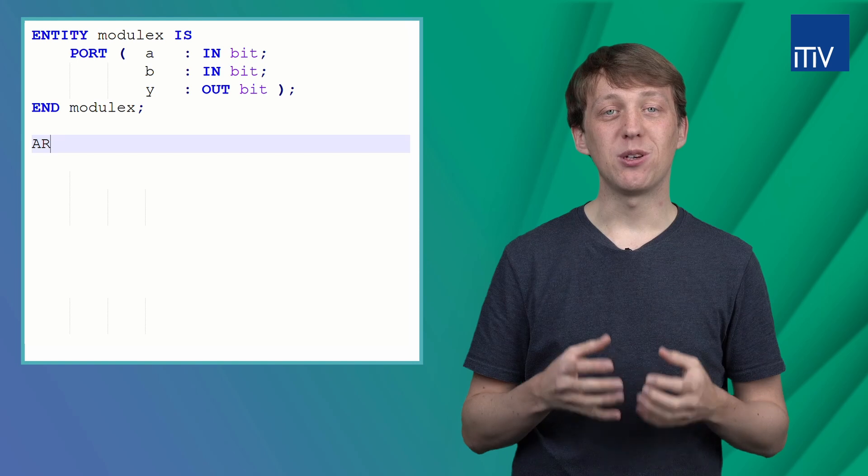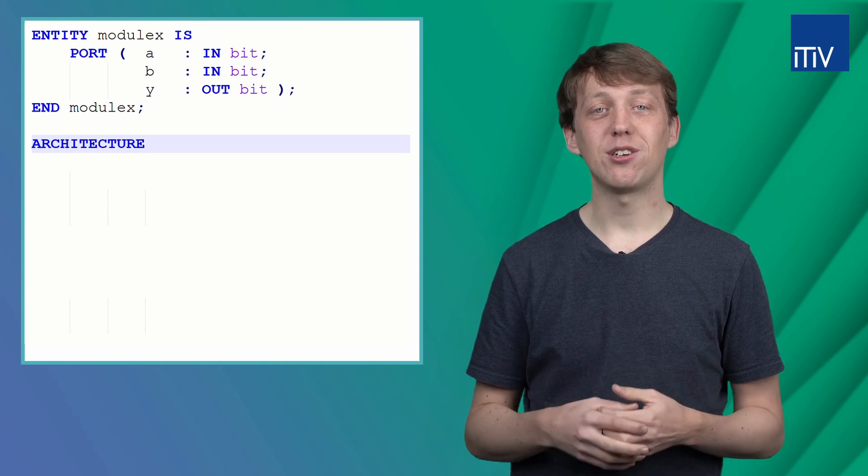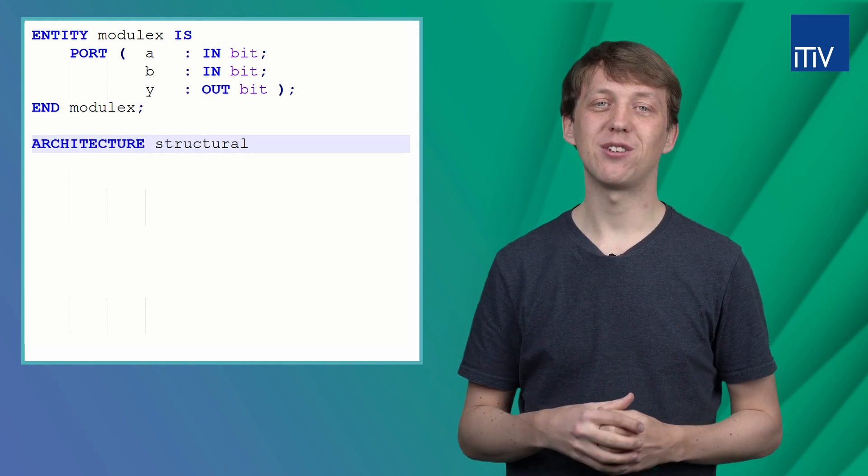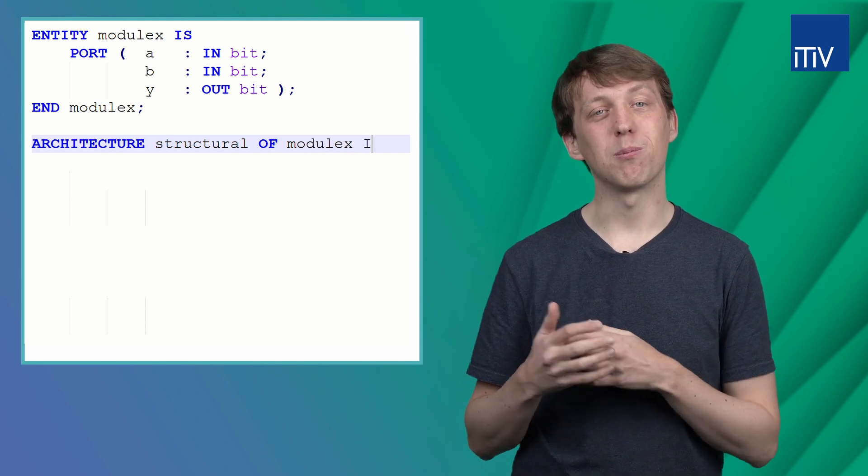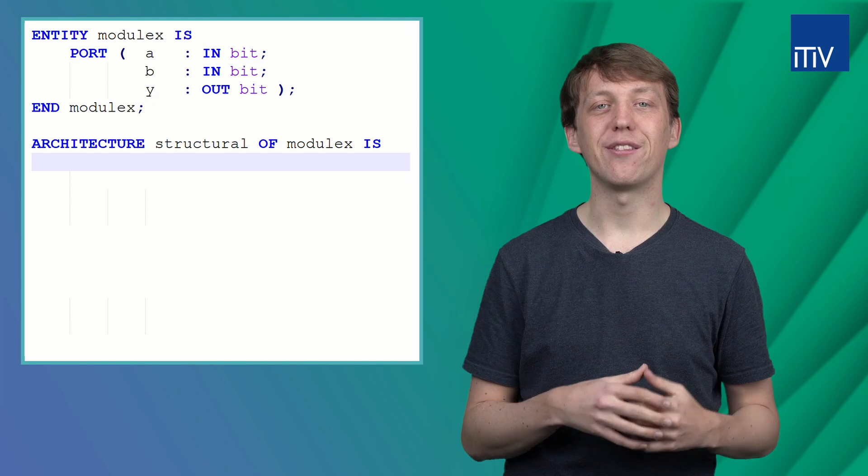Again, we start with the architecture keyword, its name and the corresponding design name. Now we have to declare the component we want to use in the architecture.